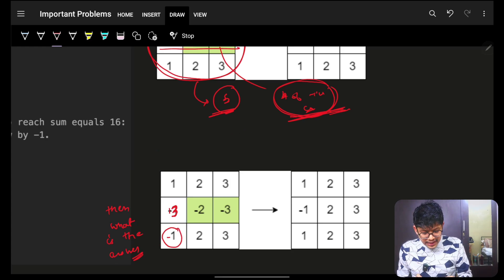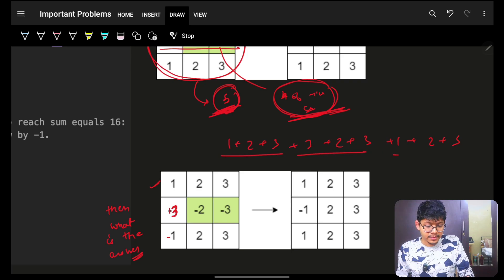Because, one time you subtracted, because you see, this summation was technically one plus two plus three. Again, I am taking this example. This summation was technically one plus two plus three plus three plus three plus two plus three plus one plus two plus three.